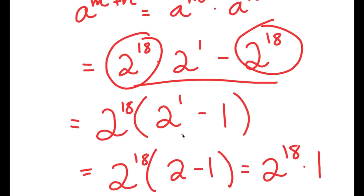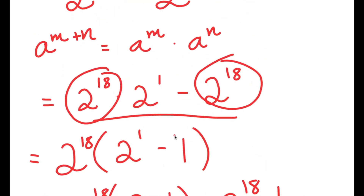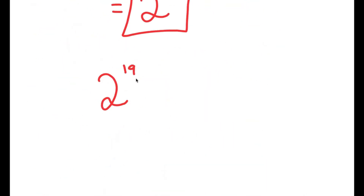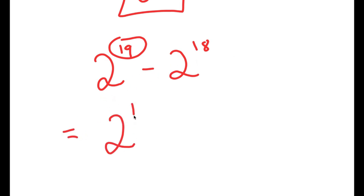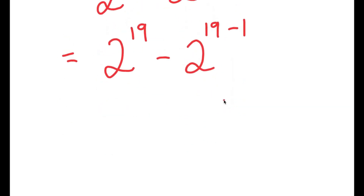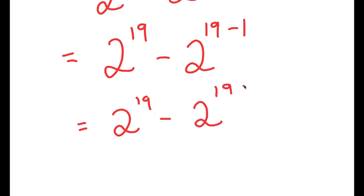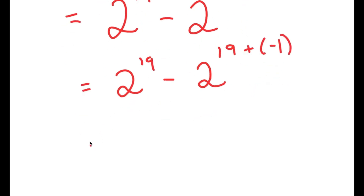There is actually another method of solving this problem. Our original problem was 2 to the power of 19 minus 2 to the power of 18. What we did was write 19 as 18 plus 1 and factor out 2 to the power of 18. Now, what if instead of rewriting 19, I rewrite 2 to the power of 18 as 2 to the power of 19 minus 1? I'm going to rewrite 19 minus 1 as 19 plus negative 1. I can still use the property that a to the power of m plus n equals a to the power of m times a to the power of n.